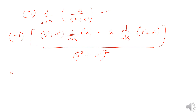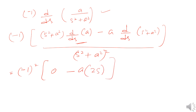Taking the derivative: the derivative of a (constant) is 0, so the first term vanishes. The derivative of (s² + a²) with respect to s is 2s. So we get −1 multiplied by (−a · 2s) divided by (s² + a²)², which gives 2as/(s² + a²)².